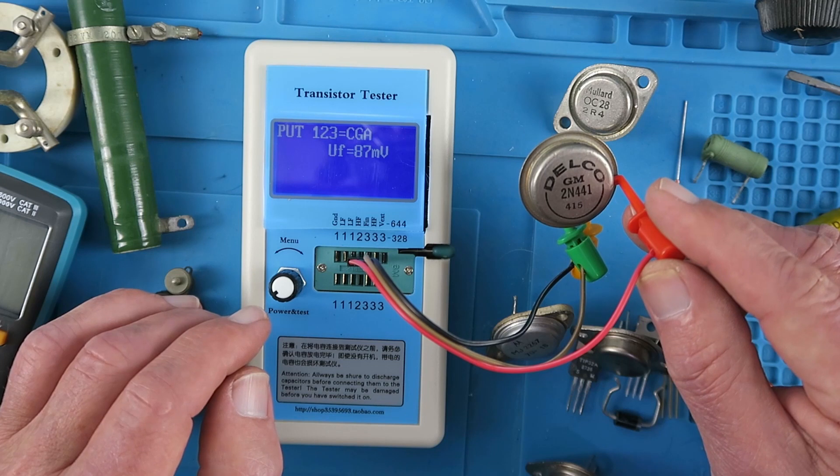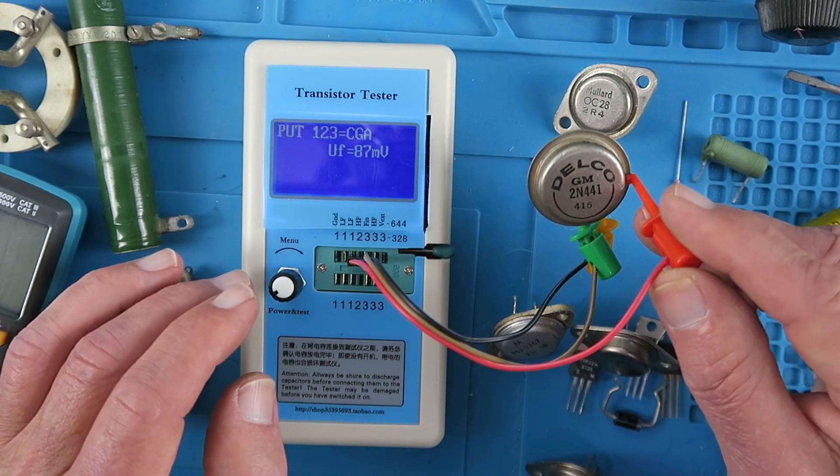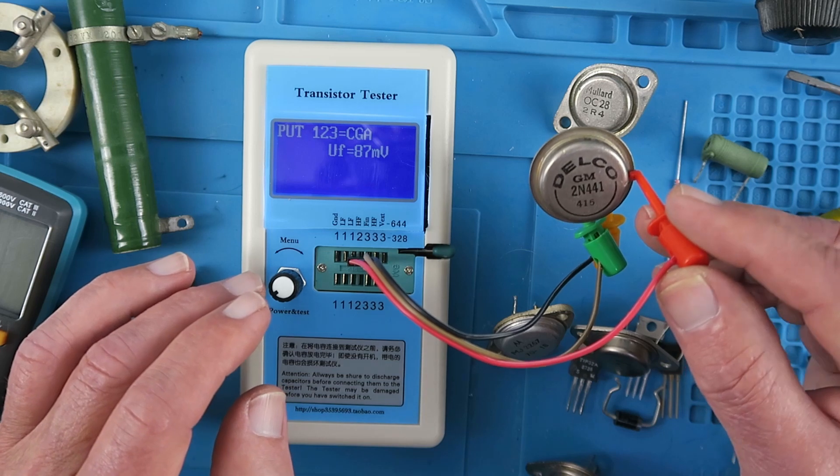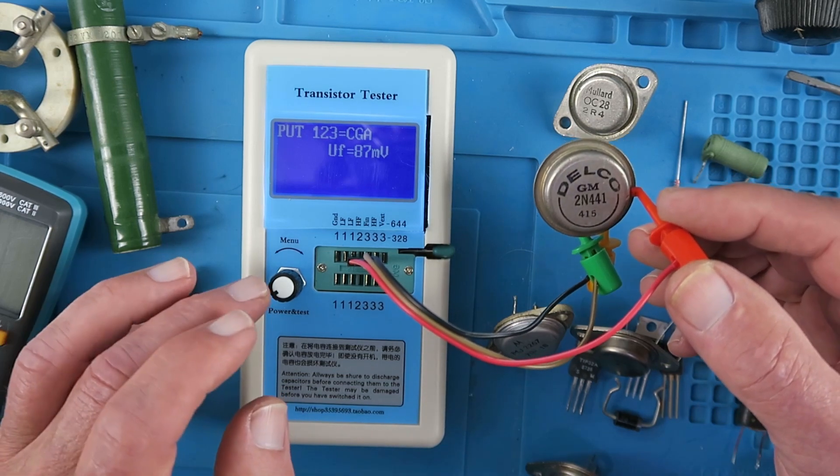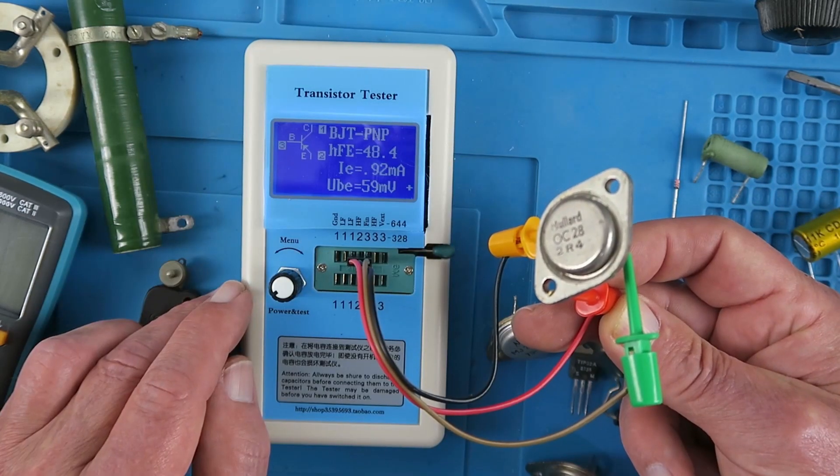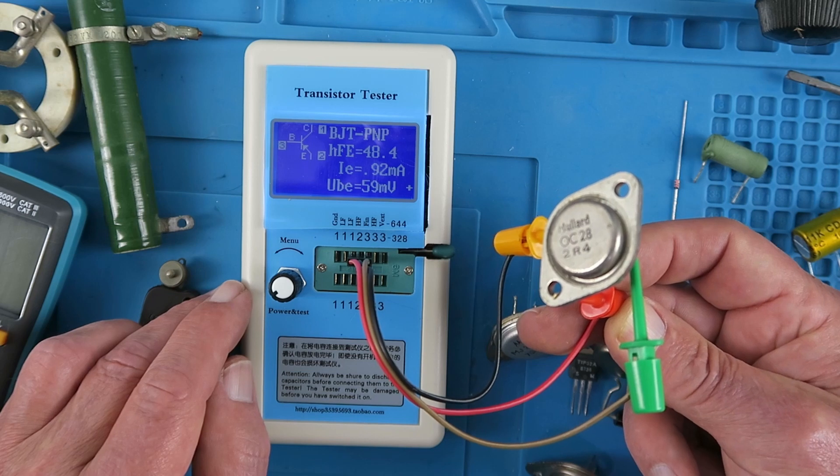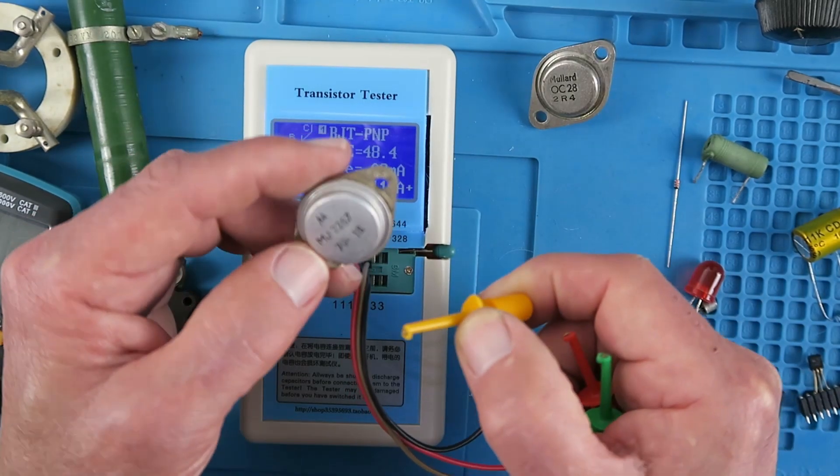So it identifies this as a programmable unijunction transistor, which it's not really. It's just a normal power transistor, but again, being germanium, it has confused the tester. The OC28 is correctly identified as a PNP transistor. This guy dates from 1970, a Motorola. Correctly identified there.